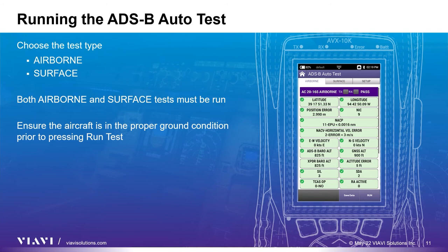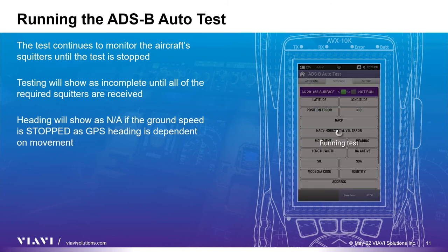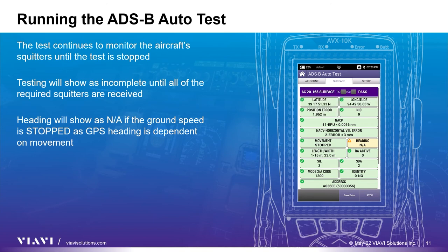The pass-fail criteria are based on reported NIC values and register content in the squitters being transmitted. The operator then chooses the surface tab to complete the ADS-B auto test. The aircraft must be configured in the ground condition before the operator presses the run key to start data collection. The surface test takes slightly longer than the airborne test because the squitter interval is considerably longer. The testing result will show as incomplete until all of the required squitters are received. The data is then populated for review. Although heading shows as NA, the AVX-10K will disregard this parameter if the ground speed is stopped, because many GPS receivers will not provide a heading if the aircraft is not moving.